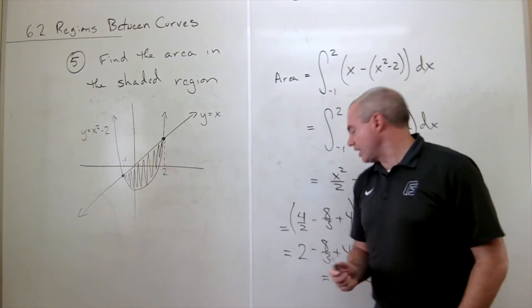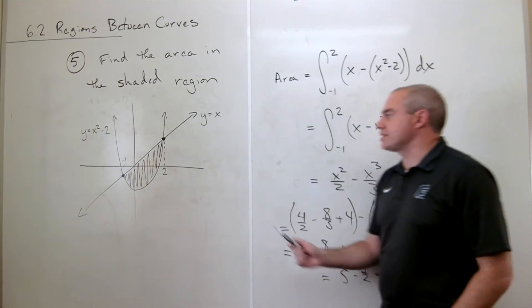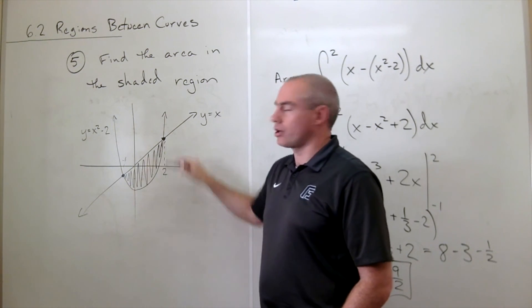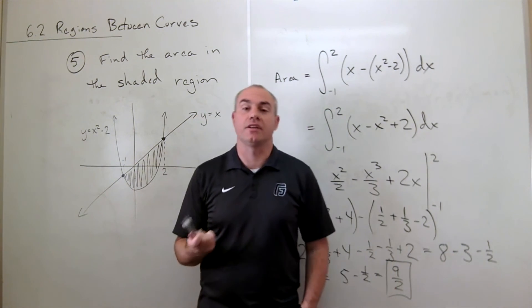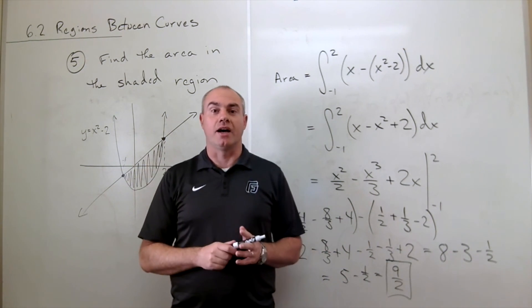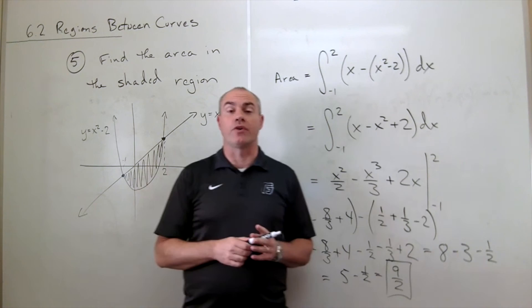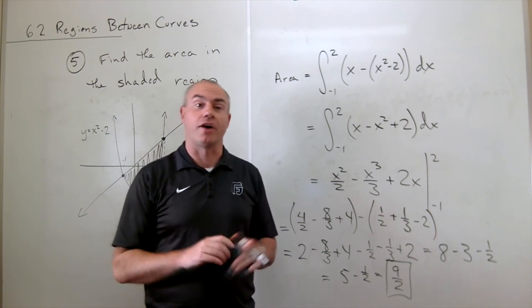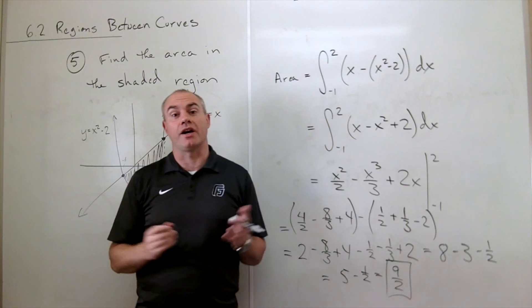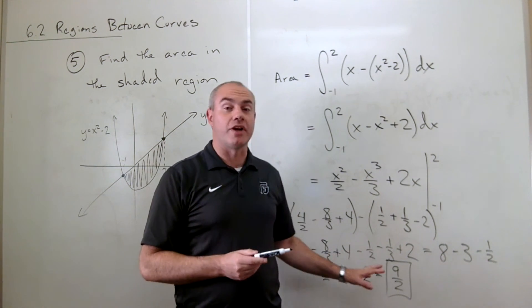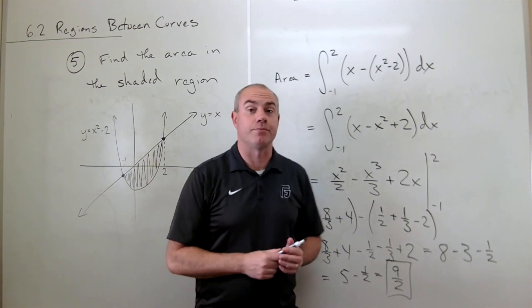And so what did I just figure out? Nine-halves is the area between these two curves. And if you're interested, that of course is in units squared. I'm not typically going to write that down based on the context of the problem. It's fairly obvious if it's in units squared, units cubed. So I will typically not write that in. But in this case, it would be in units squared.